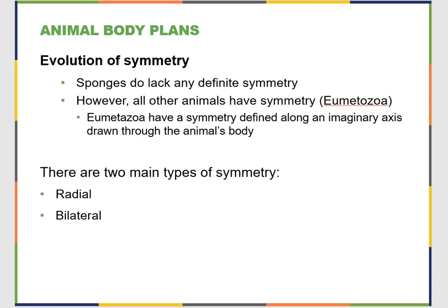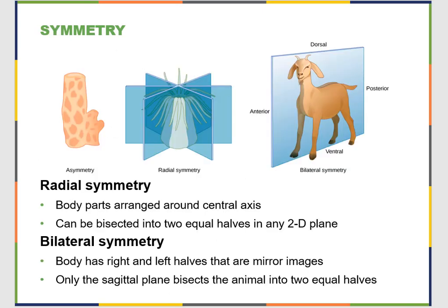For body plans, there is a specific evolution to symmetry. The most basic animals, those in Phylum Porifera — sponges — are asymmetrical; they don't have any definitive symmetry. Everyone else has symmetry, and there are two groups: radially symmetrical or bilaterally symmetrical. If you are radially symmetrical, your body parts are arranged around a central axis. You are wheel-shaped — think radial tires, that's where the name comes from.